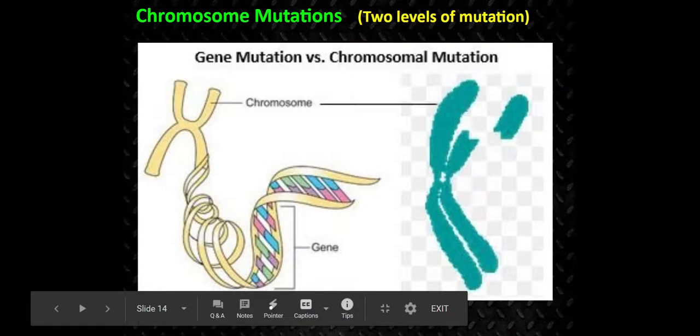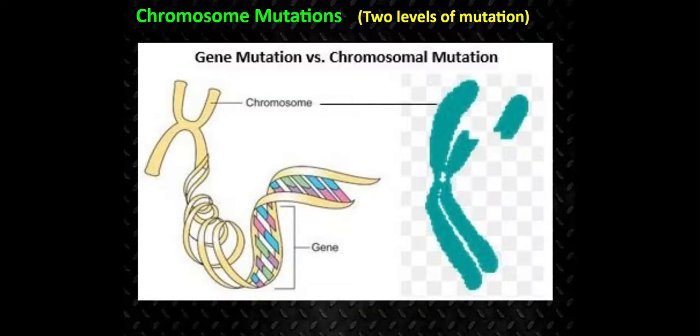Mr. Cottrell here with 29PalmScience. In this lesson, you're going to learn about chromosome mutations. Mutations can happen at two levels — they can happen at the gene level or the chromosome level.